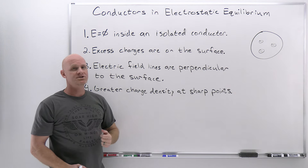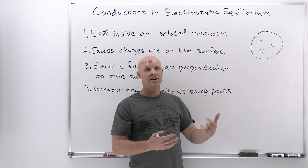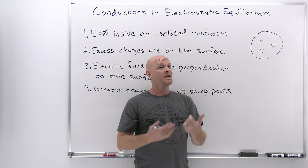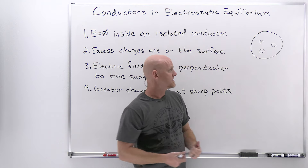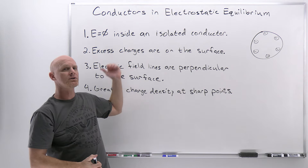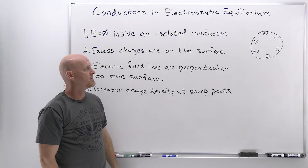The second rule says that excess charges are on the surface. A solid conductor with excess mobile charges spread throughout it would not be at electrostatic equilibrium, because those charges want to move as far away as possible. In a conductor they can move apart, so they keep moving farther apart until all the excess charge just remains on the surface, where they're as far apart as possible.